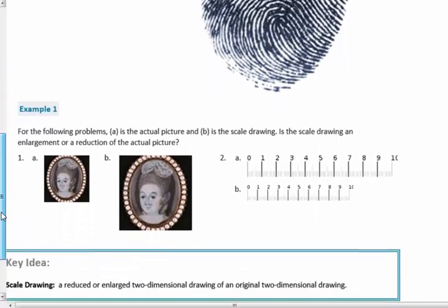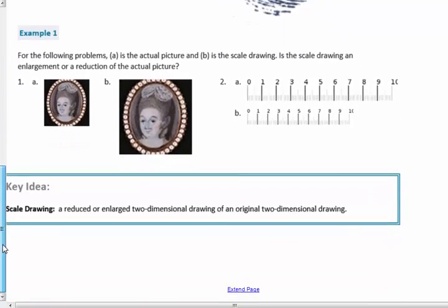So on to the first example. For the following problems, A is the actual picture, B is the scale drawing. So this is the actual, this is the scale drawing, or the new drawing that they have. Is the scale drawing an enlargement or a reduction of the actual picture? Well, you can see that it gets bigger. This is an enlargement.